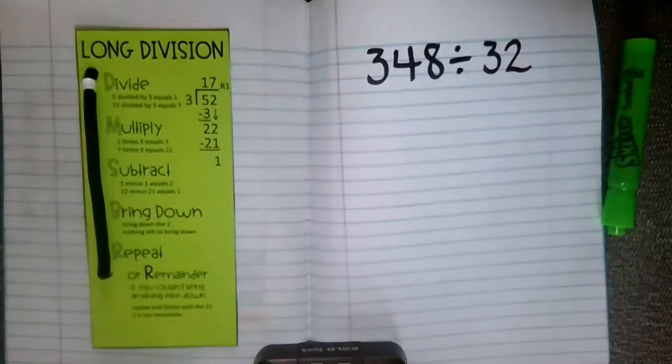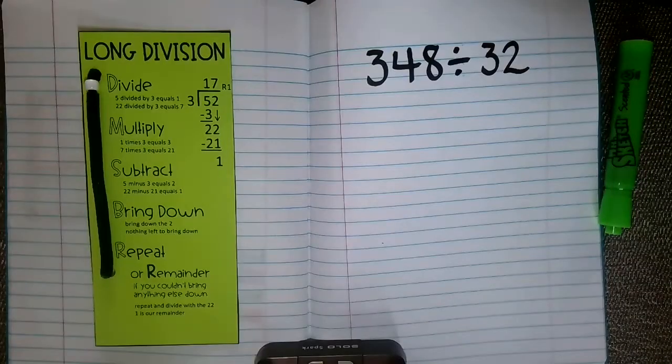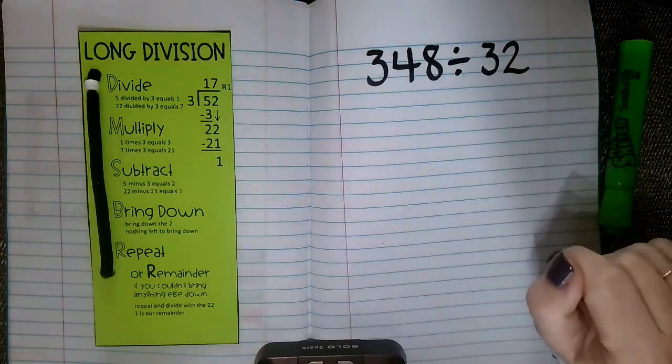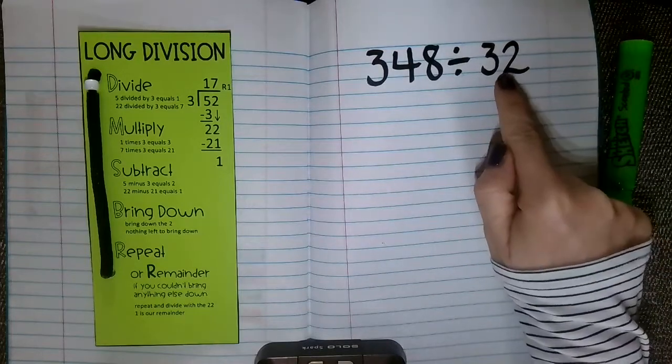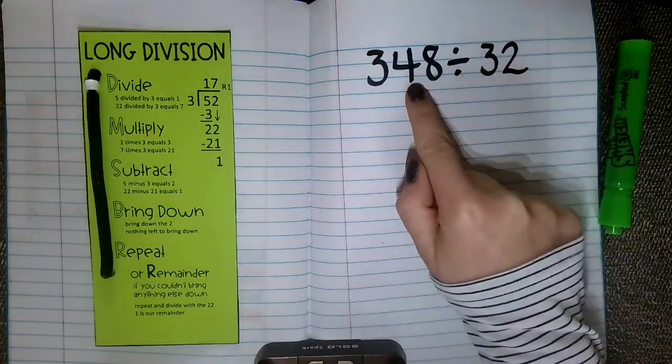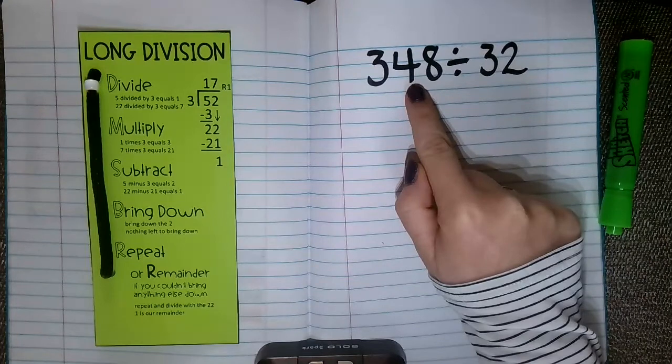So the division problem that we are going to use is going to be 348 divided by 32. So all this really means is that we're going to see how many groups of 32 can fit into the number 348.